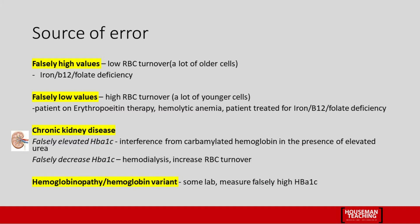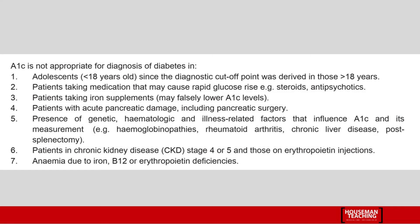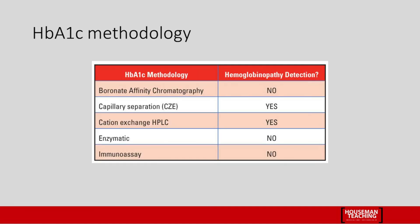HbA1c is not appropriate for diagnosis of diabetes in adolescents under 18 years old, as the diagnostic cutoff points apply to those above 18. It is also not appropriate for patients taking medications that cause rapid glucose changes, such as steroids or antipsychotics; patients taking iron supplements, which may lower HbA1c values; patients with acute pancreatic damage including pancreatic surgery; patients with genetic, hematological, or related factors such as hemoglobinopathy, rheumatoid arthritis, chronic liver disease, or post-splenectomy; patients in CKD stage 4 or 5 especially on erythropoietin; and those with anemia due to iron, B12, or erythropoietin deficiencies.